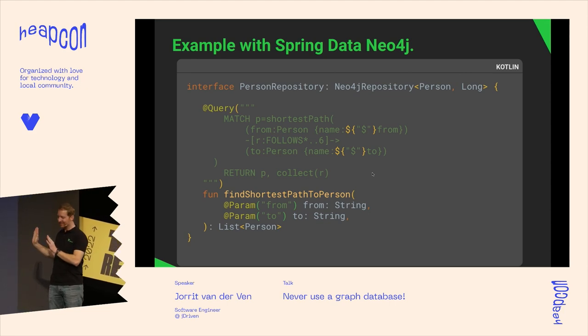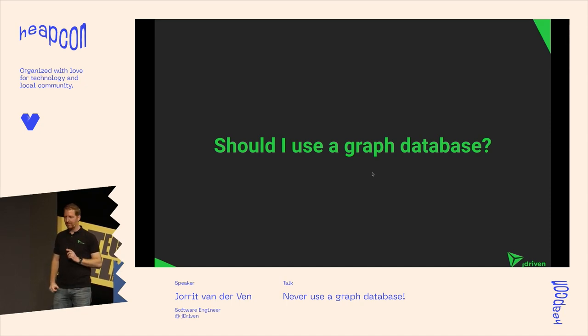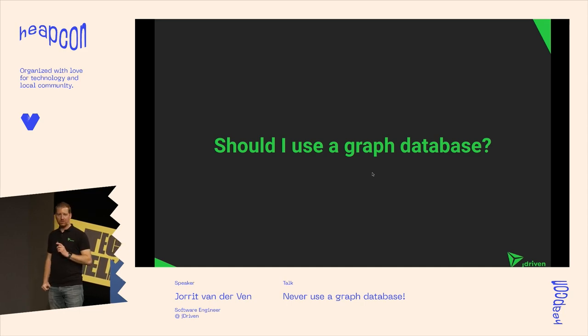Spring Data Neo4j has repositories like Spring Data JPA. You create a repository, get default findById and findAll methods, and can define queries. For example, I can put a shortest-path algorithm in there and just run it. One odd-looking thing is because multi-line strings in Kotlin use dollar signs for string templating and Neo4j uses them too to inject parameters — so it looks kind of ugly. If anyone from JetBrains is in the room, please fix it.